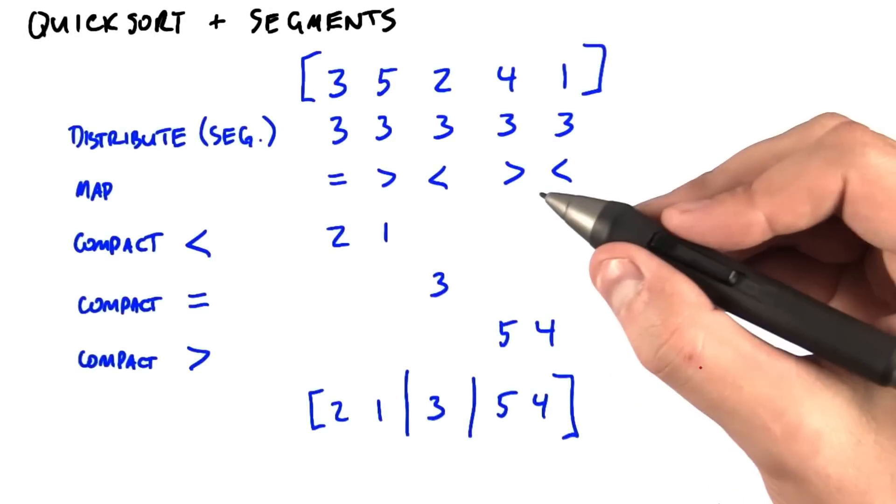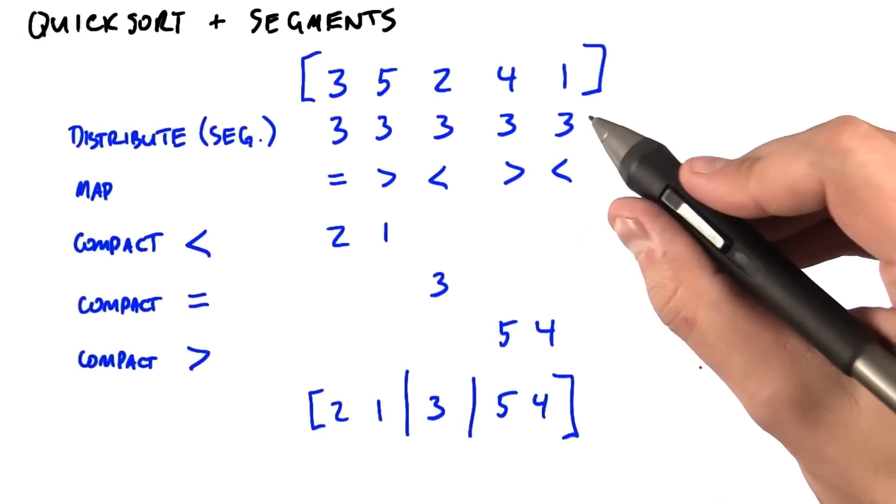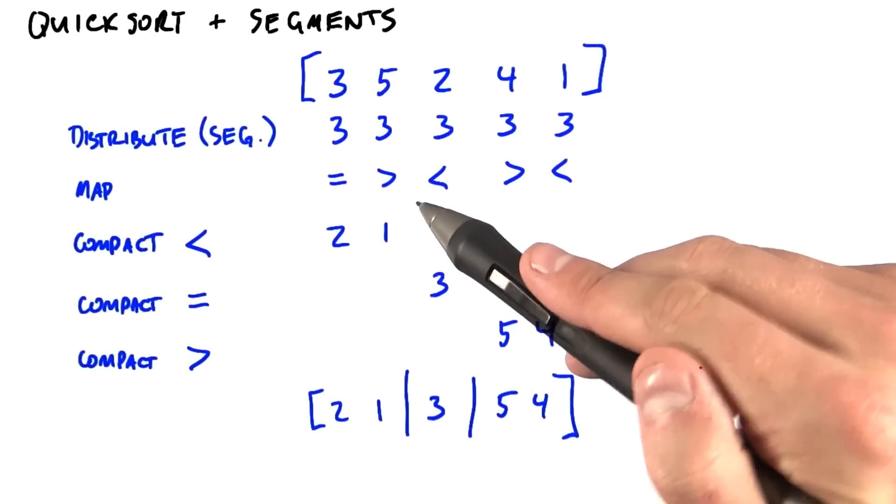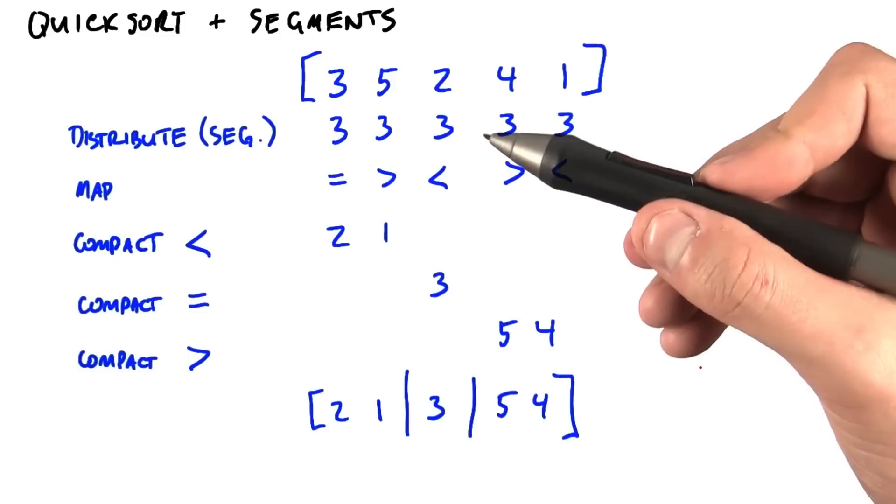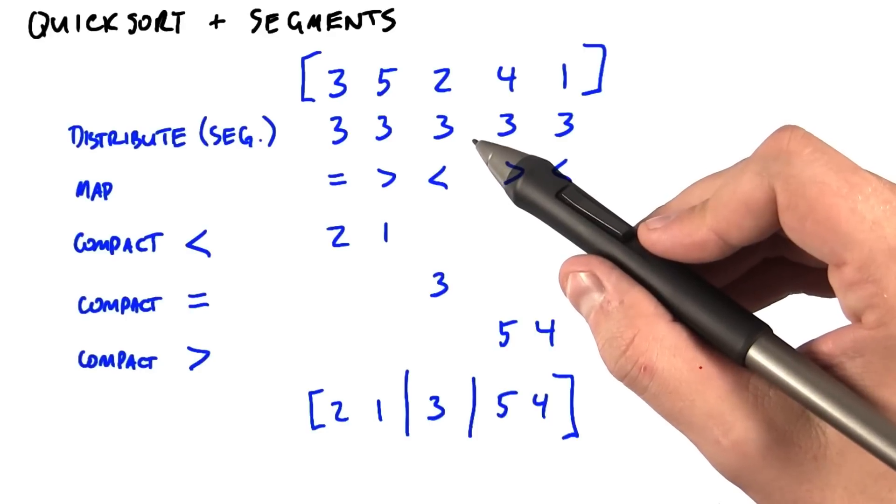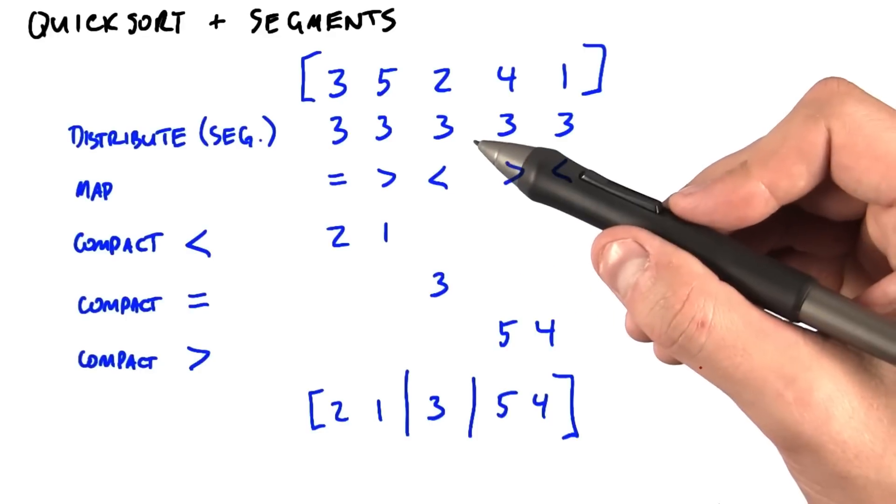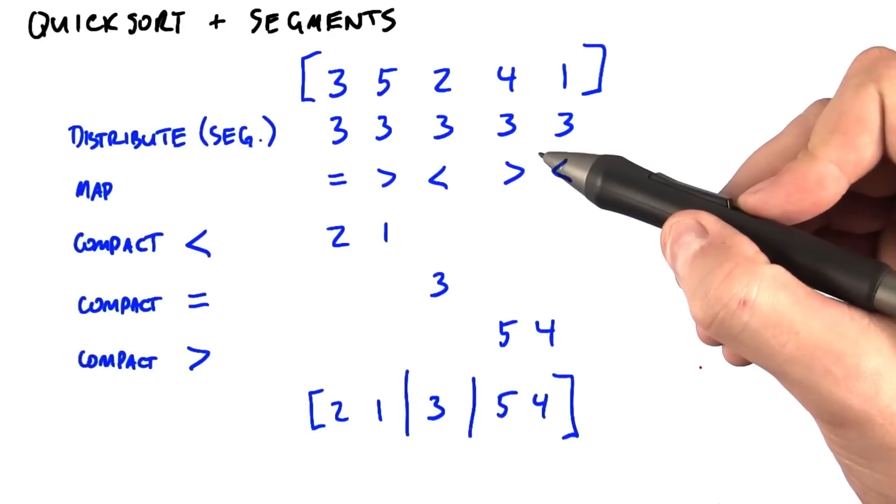So we can implement quicksort without recursion by using the idea of segments. Recall that segmented operations, like scans, only operate within a single segment. Operations on one segment don't affect other segments. That sounds a little bit like recursion, and in fact, it maps in a similar way.